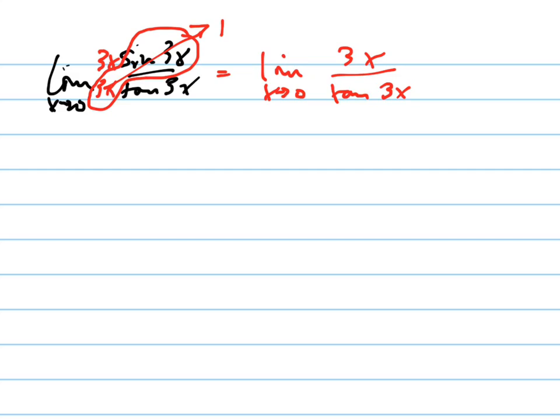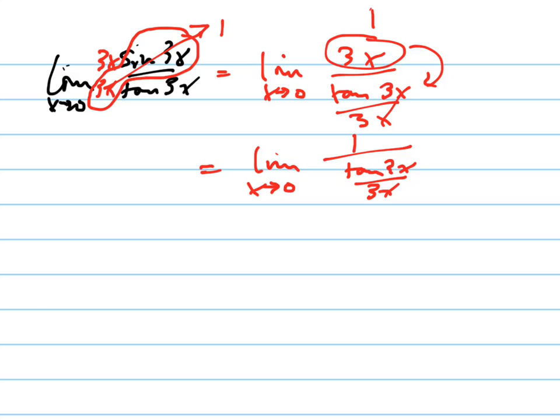Is it 3x and 5x? They were both 3x. So now I can divide this out. I can flip this to the bottom. And when I flip that to the bottom, a 1 stays on the top, so let me rewrite this. This is the limit as x goes to 0 of 1 over tangent 3x over 3x. And tangent 3x over 3x, that goes to 1.